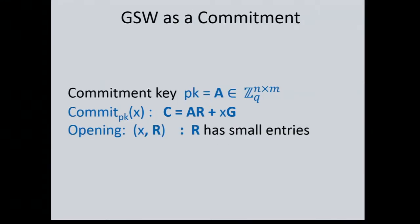I want to recast the scheme as a commitment scheme. Nothing much changes except I got rid of the secret key and changed the names of the procedures. Imagine someone generates a public key for the GSW scheme but then immediately deletes the secret key — a trusted third party — and just publishes the public key. So now there's a public key and no secret key. It's useful as a commitment.